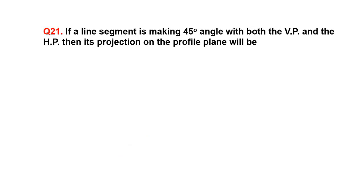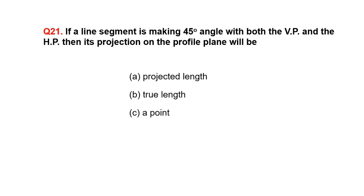If a line segment is making a 45 degree angle with both the VP and the HP, then its projection on the profile plane will be: A. Projected length, B. True length, C. A point, D. None of the above.